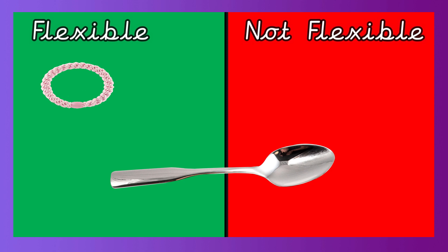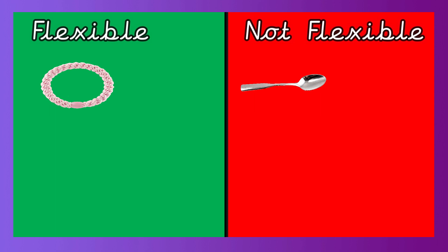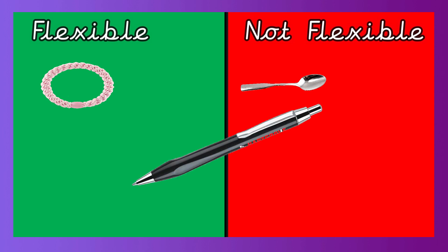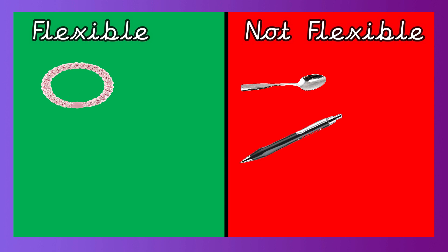Is the spoon flexible, or does it stay the same shape? That's right, it's not flexible — let's put it in the not flexible side. Now pick up the pen or pencil, hold it in one hand, and gently push down with your little finger. Is the pen flexible? No, it's not — it stays the same shape. Let's put it in the not flexible side.